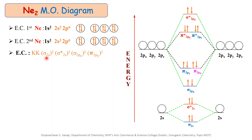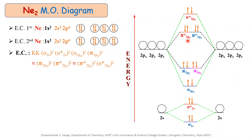The electronic configuration is as follows: KK, after that sigma 2s² which is lower energy, after that sigma star 2s² which is higher in energy, after that sigma 2px which is somewhat higher in energy than sigma star 2s, after that pi 2py and pi 2pz which are degenerate with the number of electrons noted in parentheses, after that pi star 2py and pi star 2pz antibonding molecular orbitals, and last sigma star 2px with 2 electrons in it.